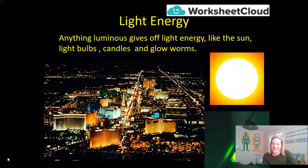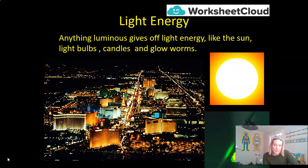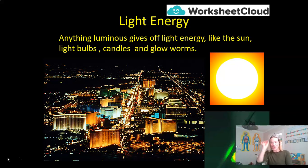Another simple one: light energy. Anything luminous — and that word luminous means light — gives off light energy. So the sun, as we said earlier, is a great example of nuclear energy, but it also gives off an immense amount of light energy and heat energy as well. Light bulbs, candles, and glow worms. Even glow sticks or glow-in-the-dark bracelets — my daughter is obsessed with anything that glows in the dark; I've got those glow stars on the top of her ceiling so when she goes to bed at night they glow. Those all give off their own light energy.